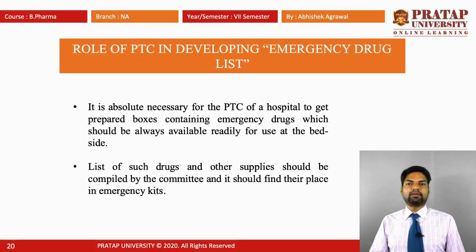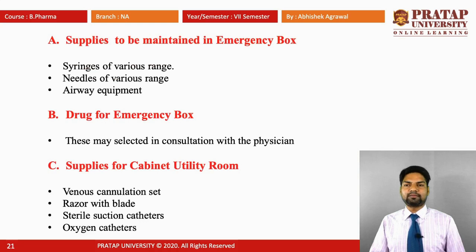Next is the role of the PTC in developing the emergency drug list. It is absolutely necessary for the PTC of a hospital to have emergency boxes containing emergency drugs, which should always be readily available for use. A bedside list of drugs and other supplies should be compiled by the committee and placed in emergency kits. Supplies to be maintained in the emergency box include syringes of various sizes such as 1 ml, 2 ml, 3 ml; needles of various gauges such as 16, 22, 26; and airway equipment.